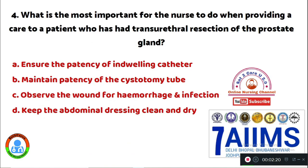Question 4: Which is the most important for the nurse to do when providing care to a patient who has had a transurethral resection of the prostate gland? Option A: ensure the patency of the indwelling catheter. Option B: maintain patency of the cystostomy tube. Option C: observe the wound for hemorrhage and infection. Option D: keep the abdominal dressing clean and dry. The right answer is Option A: ensure the patency of the indwelling catheter.